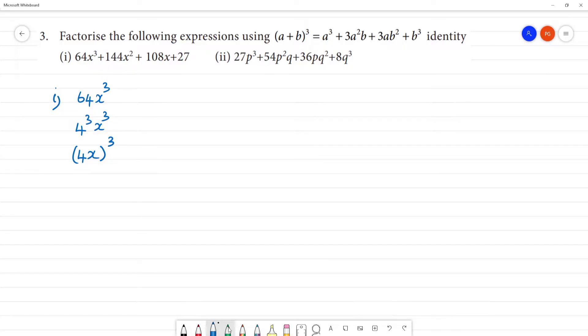Clear? So this resembles a³. 4 times 4 times 4 is 64. And at the end we have 27, which is 3³. So 3³ resembles b³.